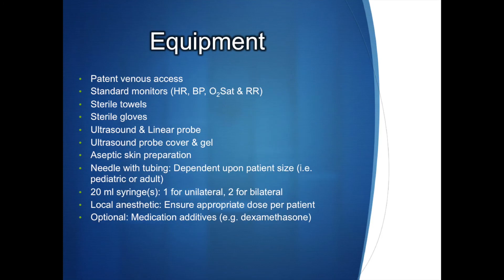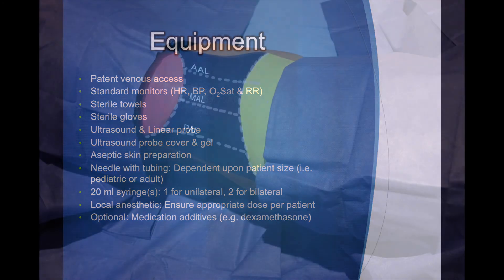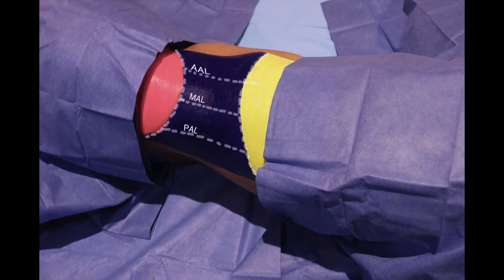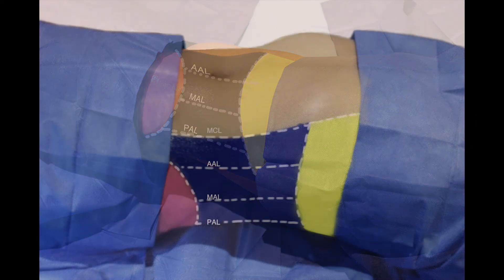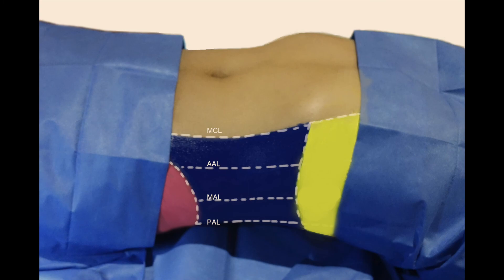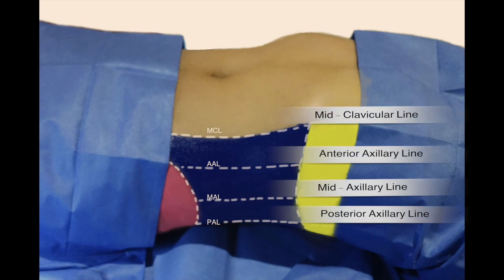This is a list of equipment needed to perform a TAP block. The TAP block can be performed after induction of anesthesia or in the post-operative setting. We will be demonstrating the ultrasound-guided lateral TAP block. First, place the patient in the supine position.